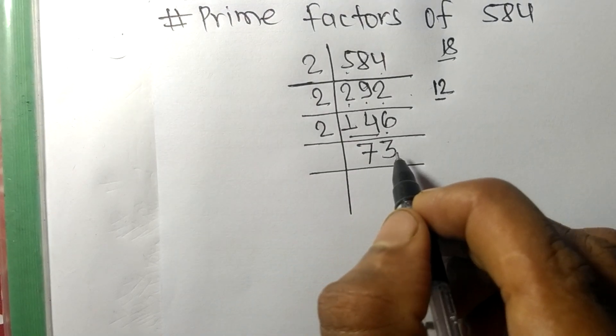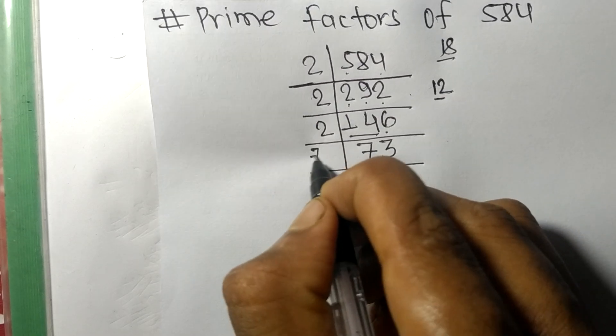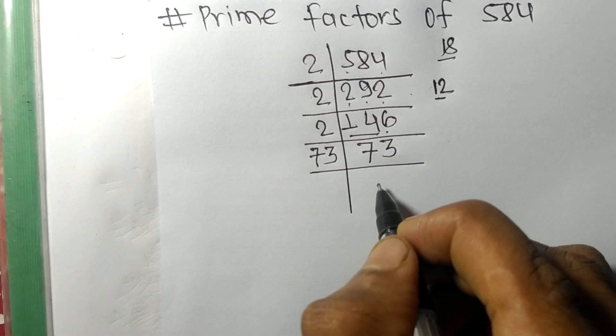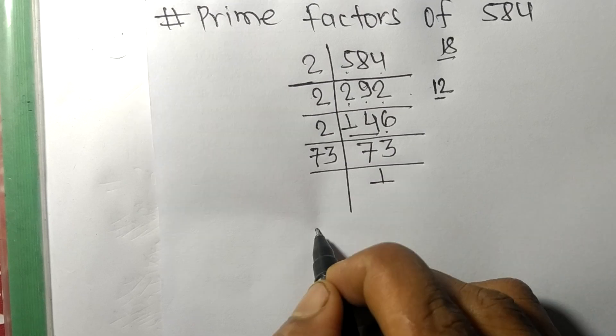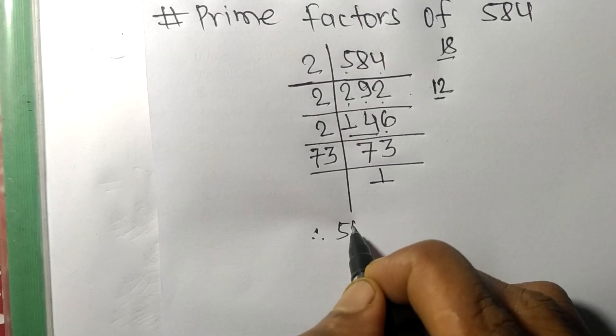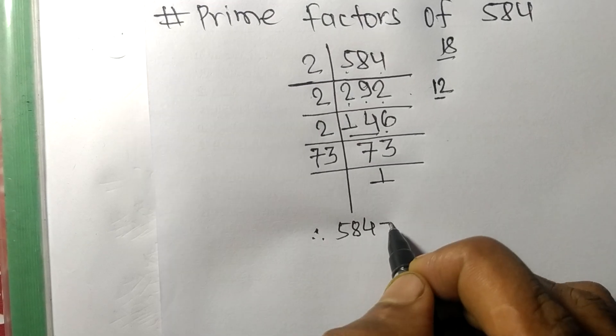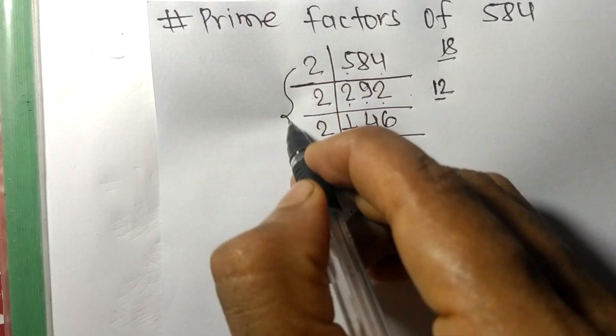So it is divisible by 73 itself and we get here 1. Therefore 584 is equal to, from this side we have 1, 2, 3 times 2.